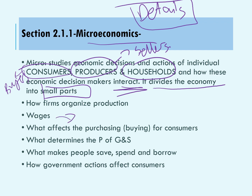Microeconomics also covers wages and salaries of employees, what makes people buy more or less of a product — which we call purchasing power — what determines the price of goods and services, what decisions make us save our money, spend more, or borrow more, and how government actions affect producers. This is microeconomics.